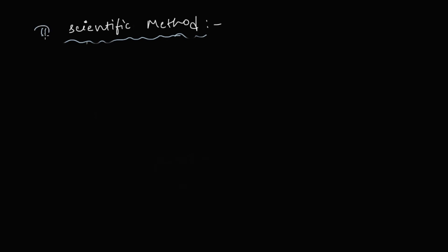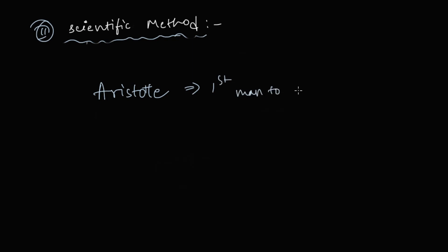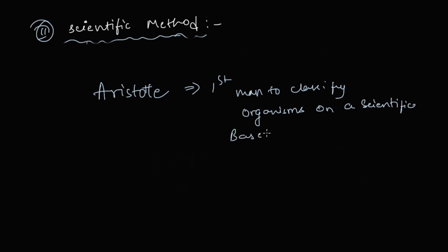The very first scientific approach to classification of organisms was done by Aristotle. He was the very first man to classify organisms on a scientific basis, and he was popularly known as the Father of Biology.